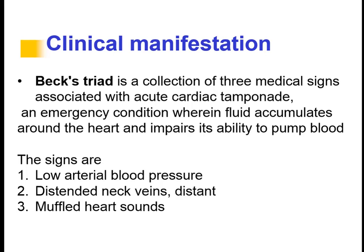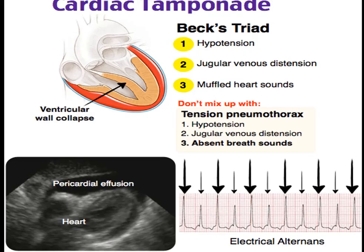The important characteristics of cardiac tamponade — Beck's triad — include low arterial pressure, distended neck veins with raised JVP, and muffled heart sounds. Comparing pneumothorax and cardiac tamponade: both involve fluid or air in the outer layer with similar signs and symptoms, but the difference is that on auscultation there is no breath sound in pneumothorax, whereas in cardiac tamponade there is a muffled heart sound.